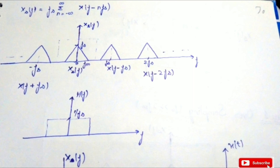In the frequency domain, our sampled signal is denoted as X_s(f), which equals fs times the summation from n = −∞ to +∞ of X(f − n·fs). Our message signal centered about zero repeats itself after every fs interval with amplitude fs — so we have a triangle at the center, one at fs, one at −fs, then at 2fs, and so on, from minus infinity to plus infinity.